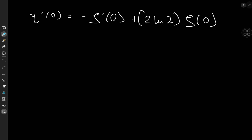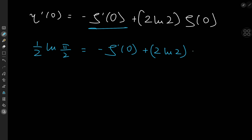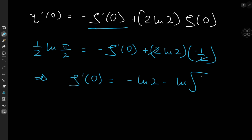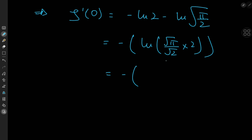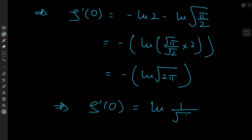We now have all ingredients to find ζ'(0). On the left, η'(0) = ½ log(π/2). On the right, −ζ'(0) + 2 log 2 · (−1/2) = −ζ'(0) − log 2. After cancellation, ζ'(0) = −log 2 − log(√π/√2) = −log(√(2π)), which means ζ'(0) = log(1/√(2π)).